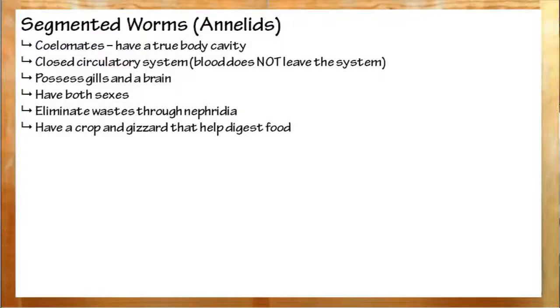Segmented worms, or annelids, are true coelomates. They have a body cavity. They have a closed circulatory system with several heart-like structures that will help pump blood along with their own undulation. They have gills, a brain, sexes, a more developed digestive system with sometimes even a crop and a gizzard, and several nephridia, which help eliminate waste along the body.